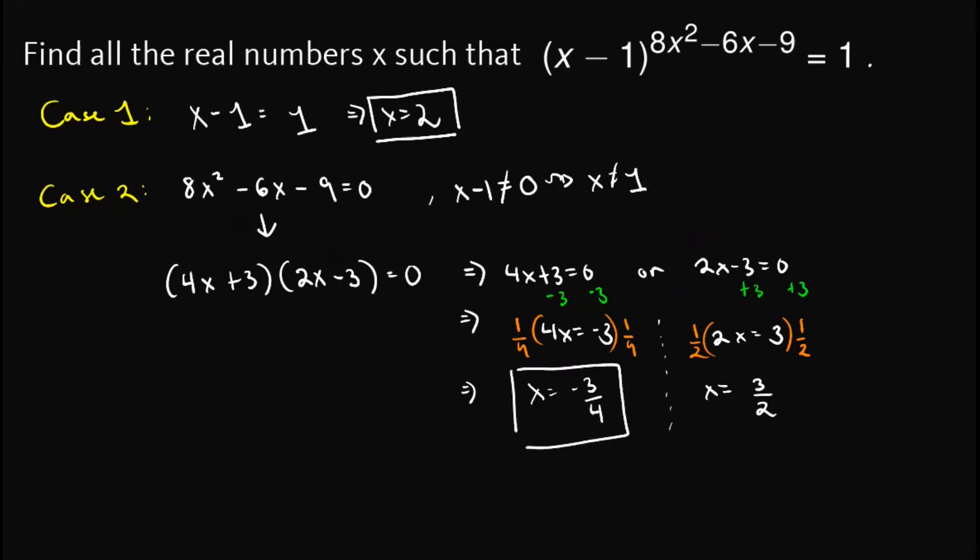So we have found 3 possible values of x. Now, are there more cases or more values of x than this? Well, the answer is no, since we have already checked all possible cases, which is either the base equals 1 or the exponent equals 0. And so we can conclude now that all real numbers x that satisfy the equation are x equals 2, x equals negative 3 over 4, and x equals 3 over 2. That is the answer for this problem.